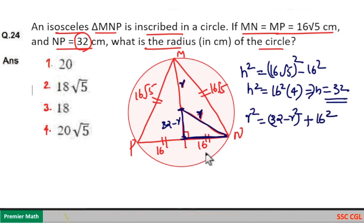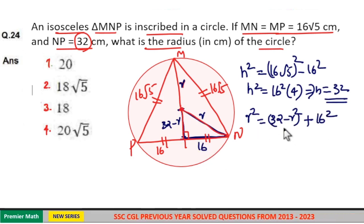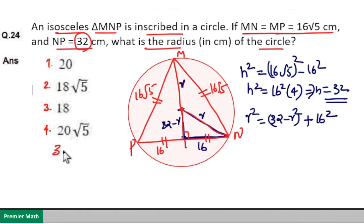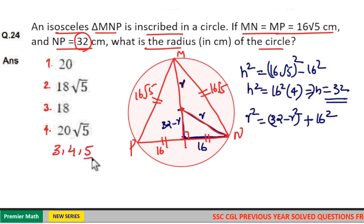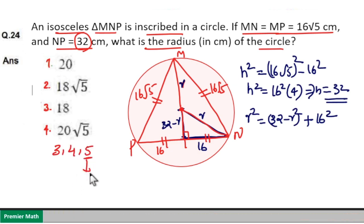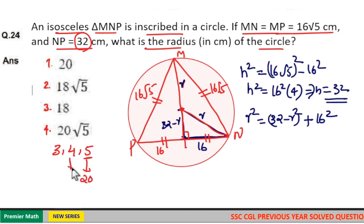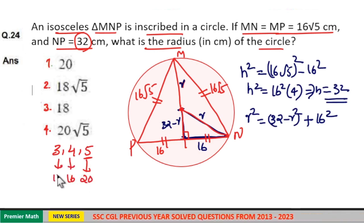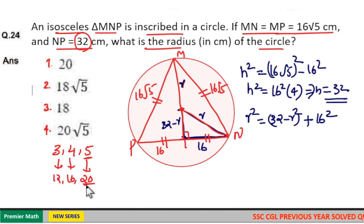The base half-length is 16. Before solving this algebraically, let's use the Pythagorean triplet approach. The basic triplet is 3, 4, 5, where 5 is the hypotenuse. Multiplying by 4: 5 times 4 is 20, 4 times 4 is 16, 3 times 4 is 12. So 12, 16, 20 is another Pythagorean triplet, where 20 is the hypotenuse.